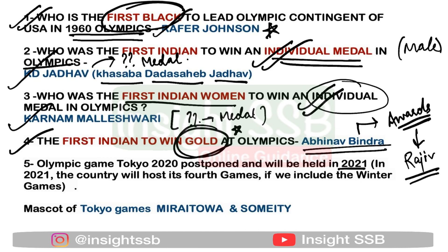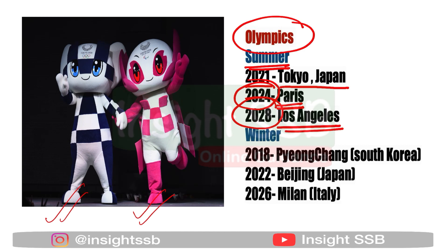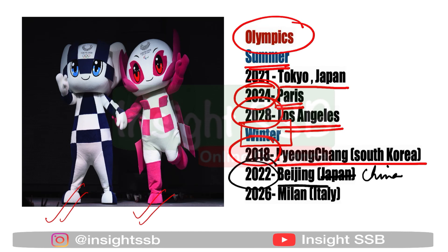Tokyo 2020, postponed to 2021, will be Japan's fourth time hosting — including both Summer and Winter Olympics combined. The mascots for the Tokyo Games are Miraitowa and Someity. Summer Olympics schedule: 2021 Tokyo, 2024 Paris, 2028 Los Angeles. Winter Olympics schedule: 2018 PyeongChang South Korea, 2022 Beijing China, 2026 Milan Italy.